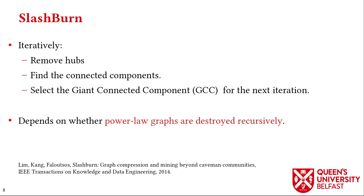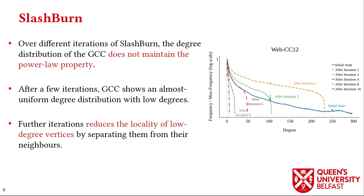The efficacy of SlashBurn on real-world graphs depends on whether these graphs are destroyed recursively. We plot the frequency of vertices for different iterations of SlashBurn and observe that real-world graphs are not destroyed recursively. After a few iterations, the giant connected component shows an almost uniform degree distribution, and more iterations separate low-degree vertices from their neighbors.